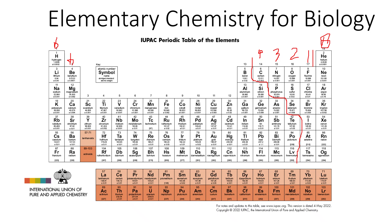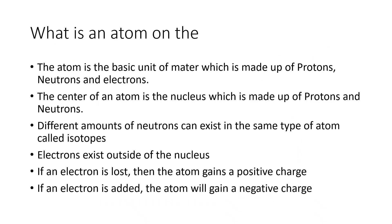To understand why, you really have to look at the outer electron shell, which I will talk about later. For now, I want to review what an atom is. An atom is a basic unit of matter, made up of protons, neutrons, and electrons.